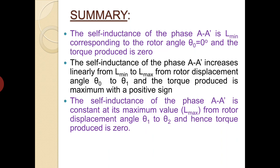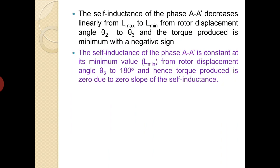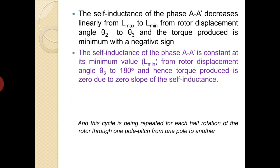The self-inductance of phase A-A' increases linearly from minimum to maximum value for θ = 0° to θ₁, and the torque produced is maximum with a positive sign. When the rotor moves from θ₁ to θ₂, the torque produced is 0 because there is barely any change in the self-inductance. The self-inductance decreases linearly from maximum to minimum for rotor displacement θ₂ to θ₃, and the torque produced is minimum with a negative sign. The self-inductance remains constant at its minimum value from θ₃ to 180°, hence torque produced is 0 due to zero slope, and this cycle repeats for each half rotation of the rotor through one pole pitch.